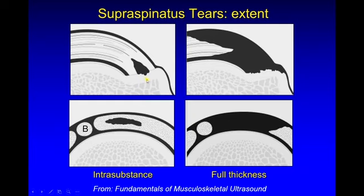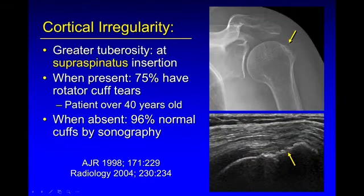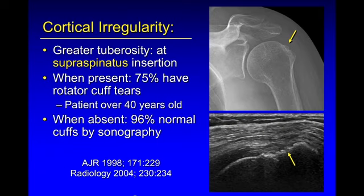Note the bone irregularity, which is a very important indirect sign of a rotator cuff tear. It has been shown that if you see cortical irregularity at the supraspinatus footprint on a radiograph, 75% of those patients will have a rotator cuff tear. If that bone is smooth, 96% will have a normal rotator cuff. We see this bone irregularity very clearly on ultrasound — here the bone is smooth, and there it's markedly irregular at the footprint of the supraspinatus.